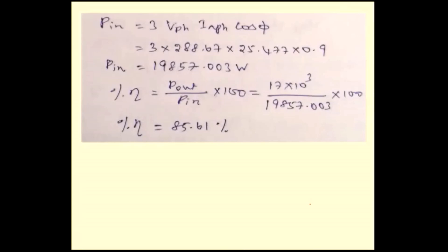Once you have IA value, same procedure. Pin equals 3 into Vphase then IAphase then cos φ, that's input power. Once you have input power, output power is given in question itself, 17 × 10³. The input power you calculated. Efficiency is 85.61%.